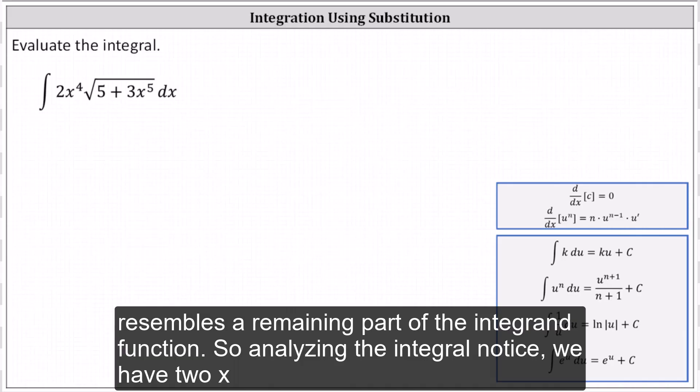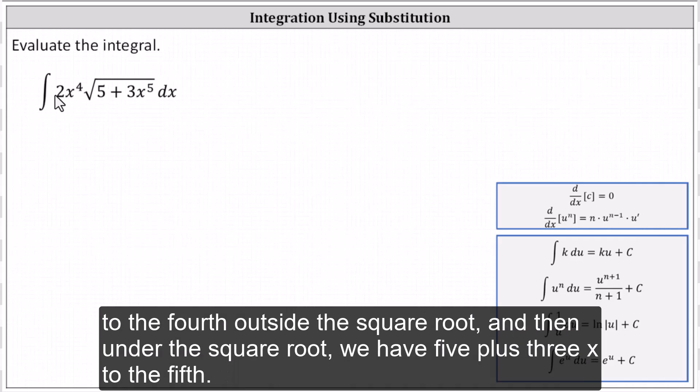So analyzing the integral, notice we have 2x^4 outside the square root and then under the square root we have 5 + 3x^5.